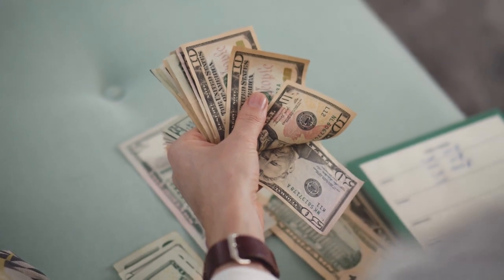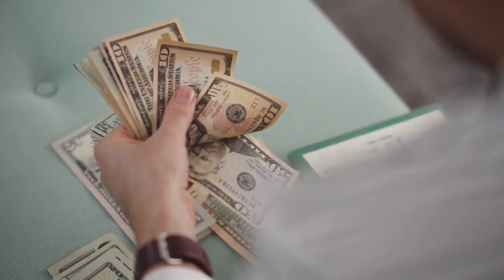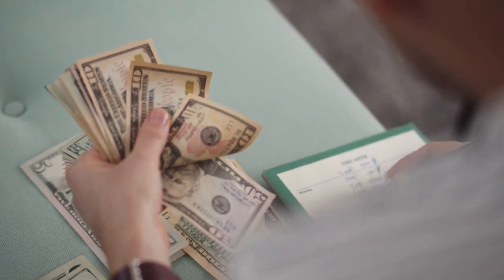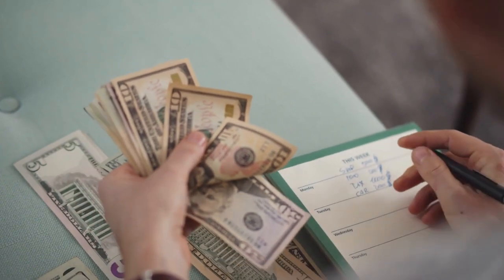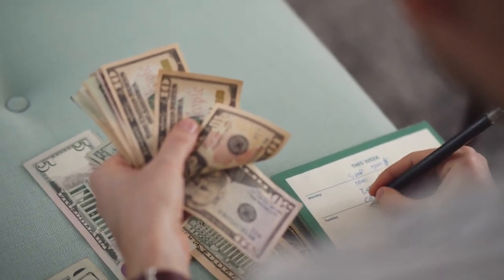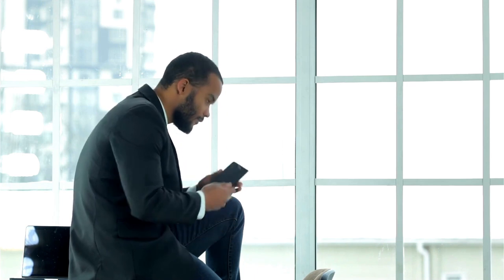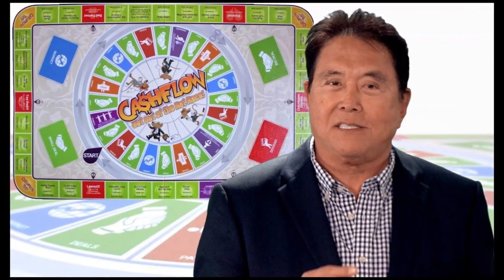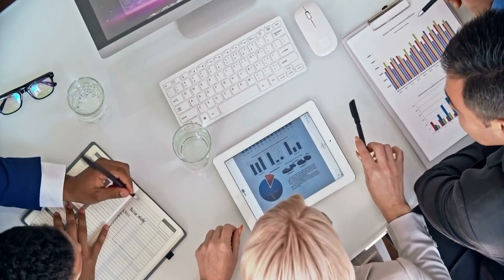For instance, every time a book you've written is sold or a song you've composed is streamed, you get a percentage of that sale. Though it requires initial effort to create, the subsequent income can be passive for years or even decades. Kiyosaki created a financial literacy game called Cash Flow. He spoke about how he earns passive income from this game.